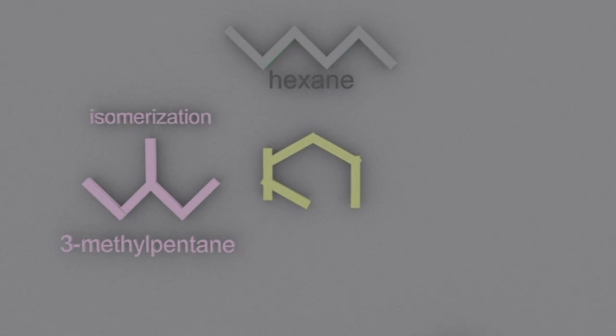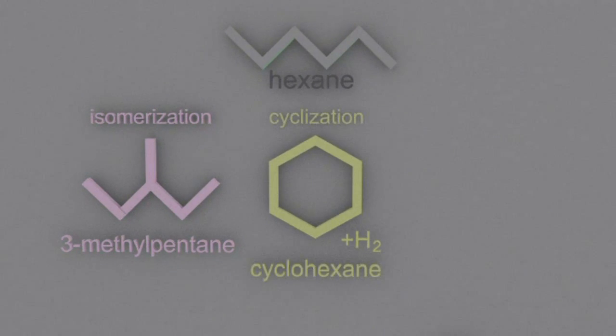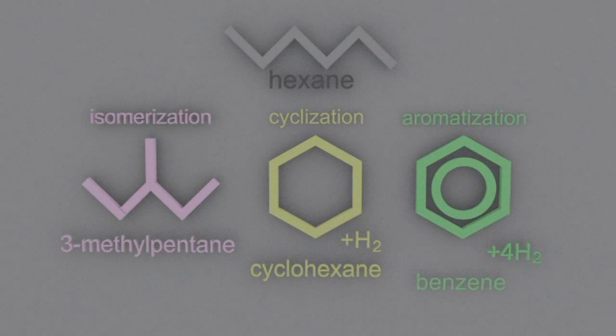The second sort of reforming is cyclisation, which makes, for example in this case, cyclohexane. So it's a ring structure with only single bonds between the carbons. The third sort is aromatisation, which again makes a ring structure but it's an aromatic ring based on benzene with those delocalised electrons in the middle.